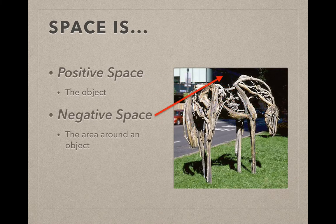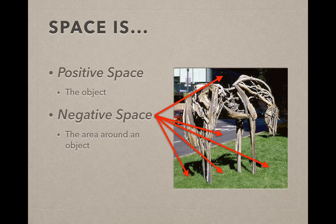Negative space is the areas that are around the object. That can actually be areas that are removed from the piece or areas around the piece.